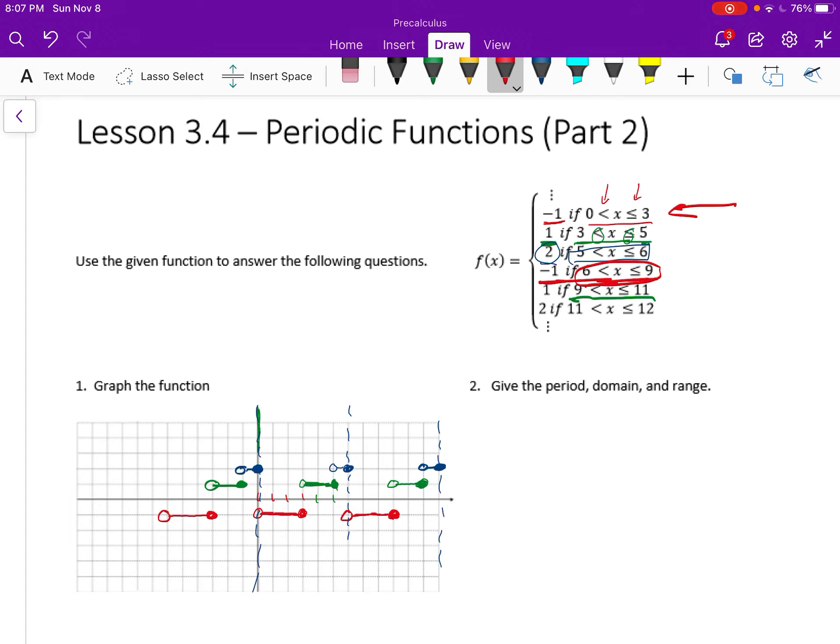It says give the period, domain, and range. I did already section off the period here with these dashed lines. It looks like the period is six units, so the period is going to be six.